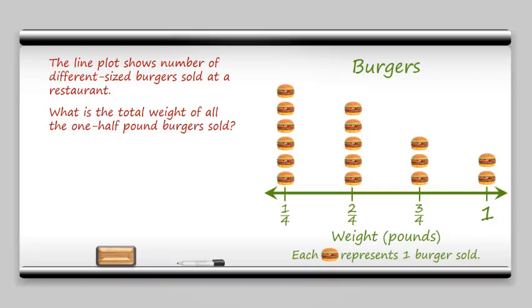OK. First of all, we need to remember that 1/2 is equivalent to 2/4. So then when we look on our line plot and we look at 2/4, we see that we have 5 burgers.